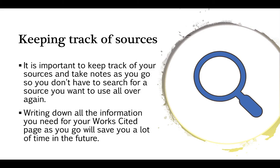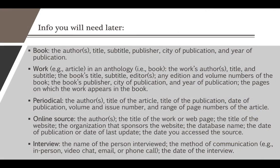Once you start finding sources, you need to keep track of them so you don't lose what you want to use. It's important to take notes as you go — list the titles of articles, journals, books, or web pages so you don't have to search for them all again. Write down all the information you need for your works cited page as you go, because if you use a source it has to be on your works cited page. You can't say you got a quote but don't remember where it's from — that is considered plagiarism and will get you a zero.